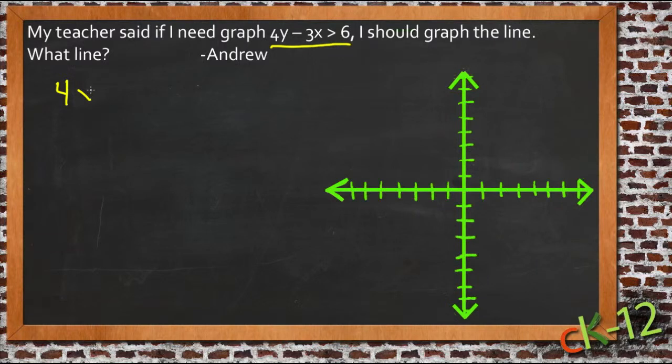So we have 4y minus 3x is greater than 6. So no matter what happens, no matter what x and y are, they have to multiply by 4 and 3 respectively and then be subtracted from each other so that their total value is 6. So really, we're going to come up with some number for each of those. And then as long as they're both bigger than that, it's okay. It doesn't have to be just exactly 6.